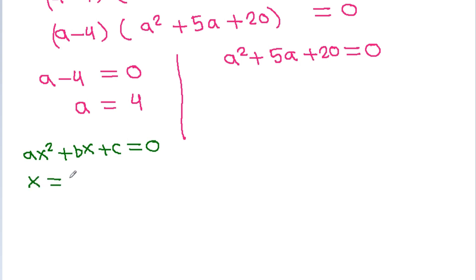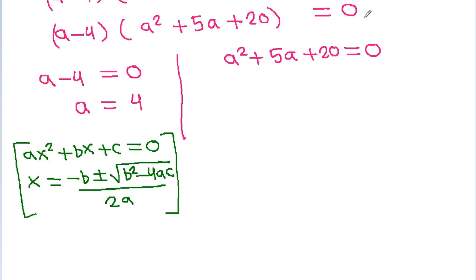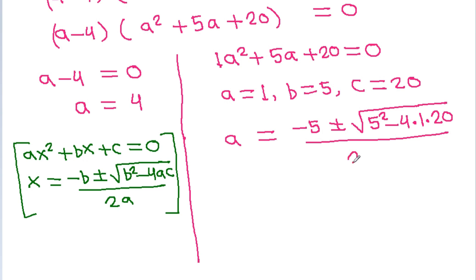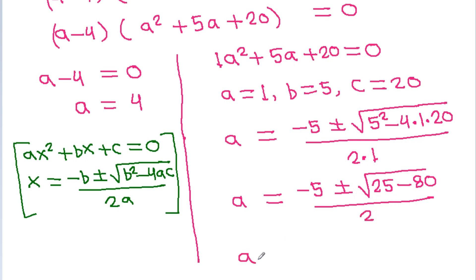For a² + 5a + 20 equals 0, using the quadratic formula x equals [minus b ± √(b² minus 4ac)] / 2a, where a = 1, b = 5, and c = 20. So a equals [minus 5 ± √(5² minus 4 × 1 × 20)] / (2 × 1), which gives [minus 5 ± √(25 minus 80)] / 2.